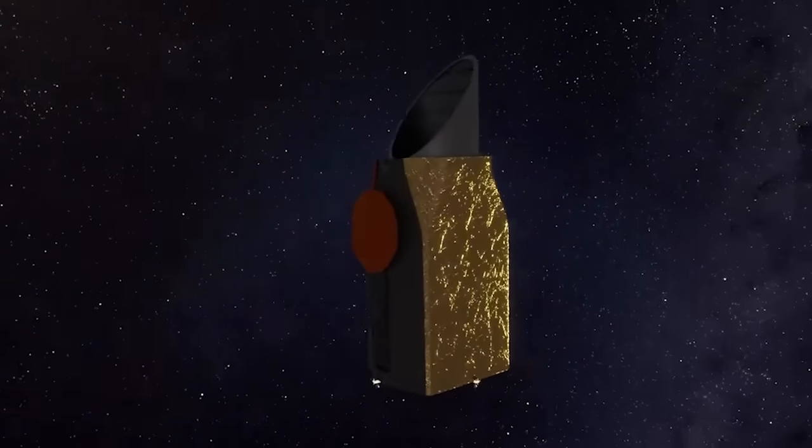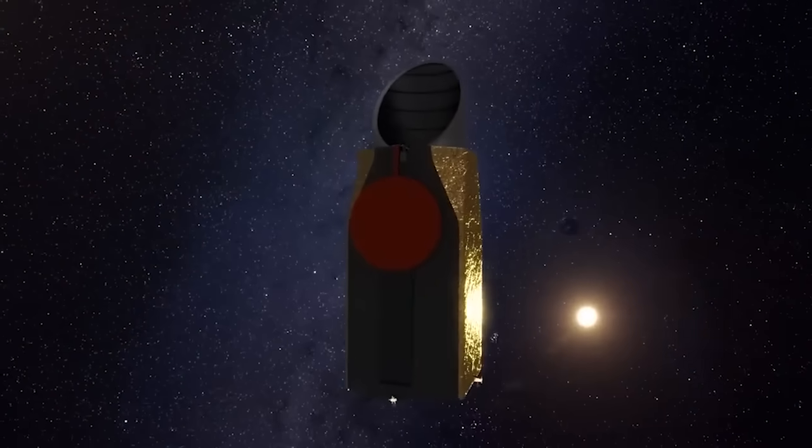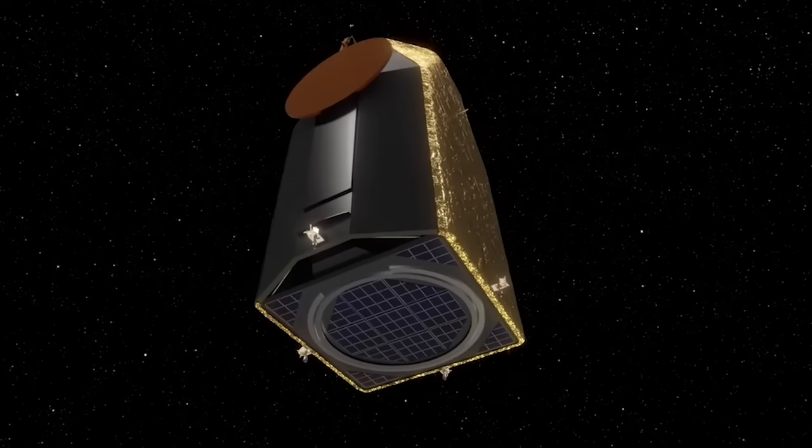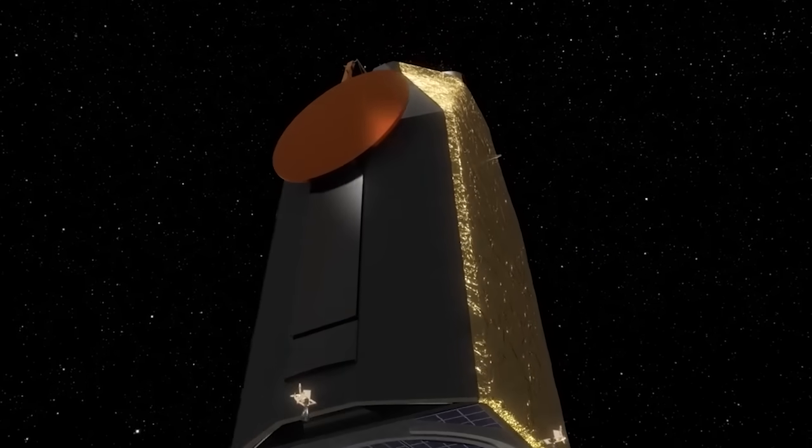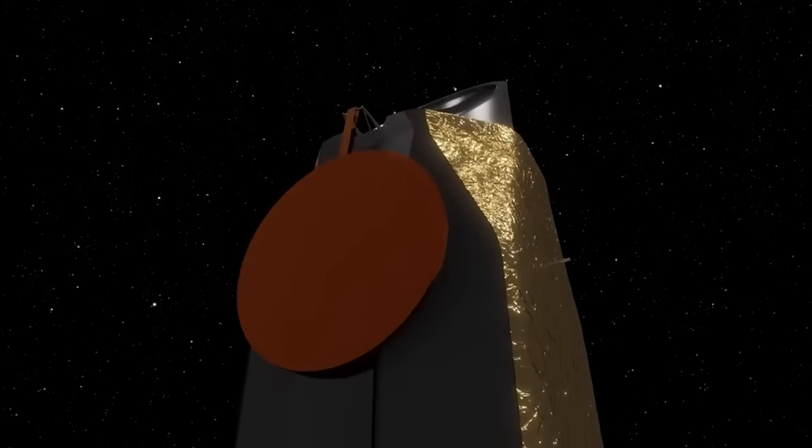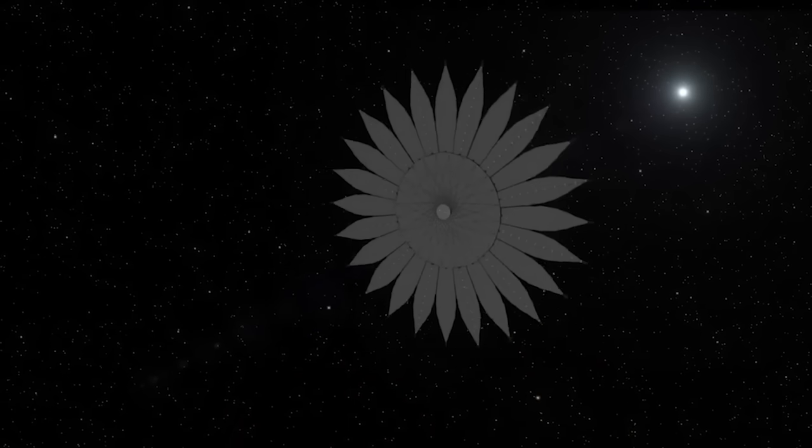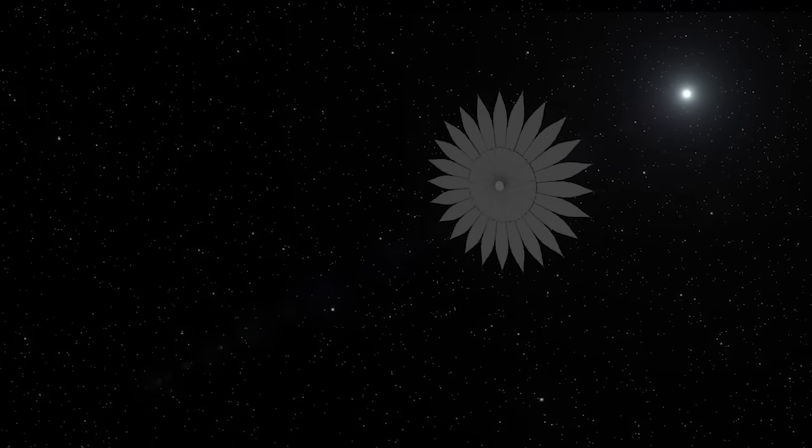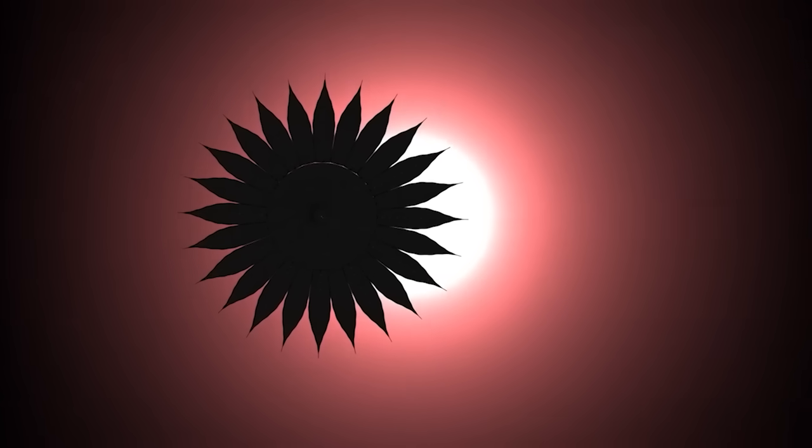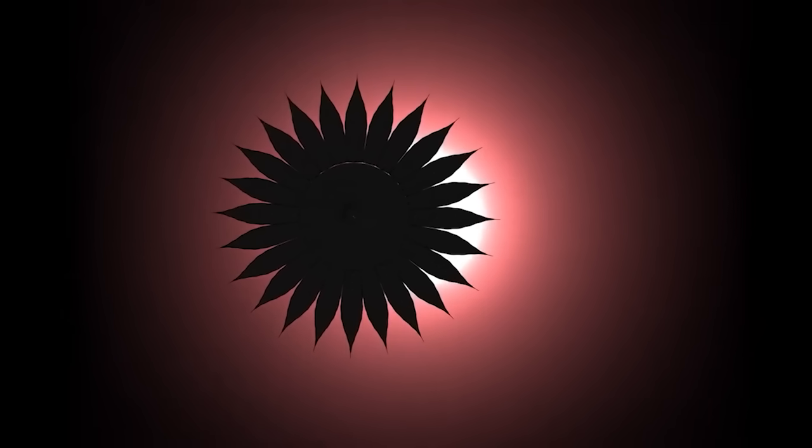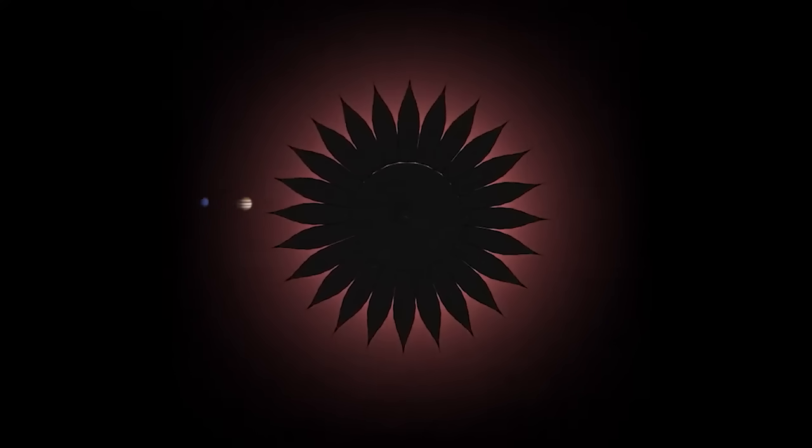This large observatory will have a mirror of 6 to 8 meters to see in the visible ultraviolet and infrared. It will be capable of discovering habitable exoplanets and signs of potential extraterrestrial life on them. The first mission will be to study in detail the 25 most Earth-like exoplanets. This is the minimum necessary to statistically confirm whether life is common in the galaxy.